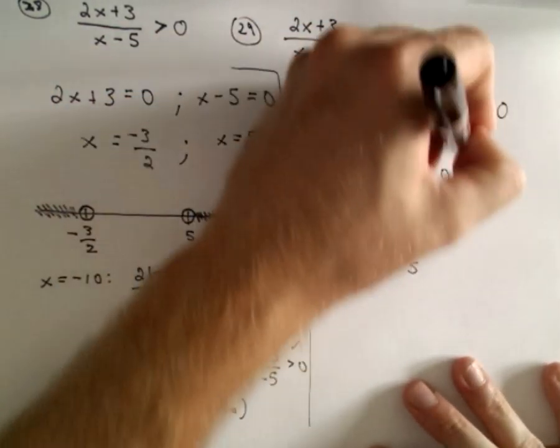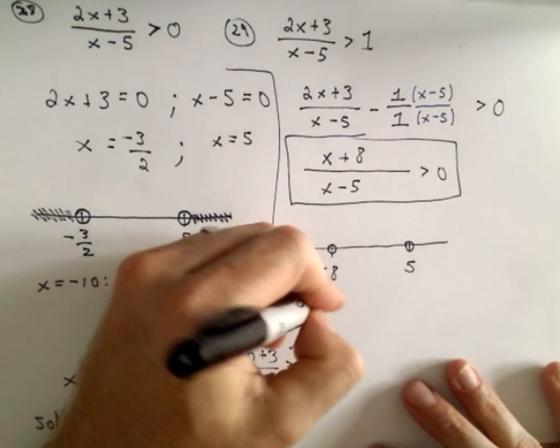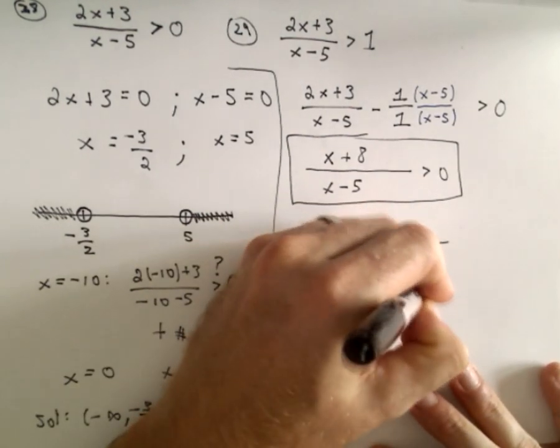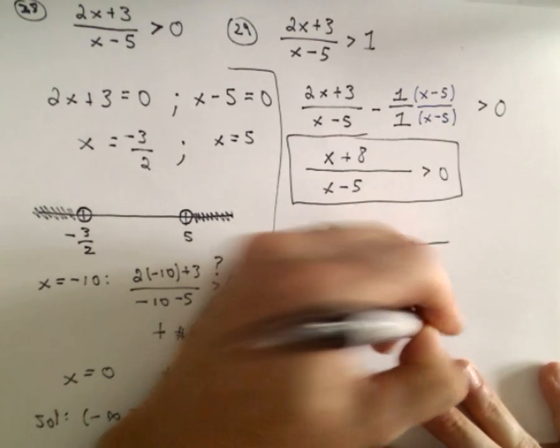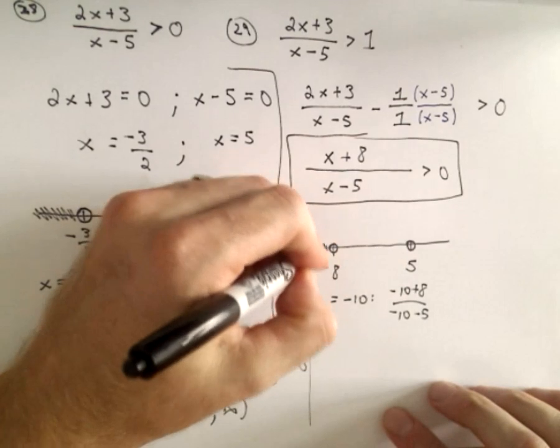So okay, I'm focusing in on this inequality because, to me, that's kind of the most simplified form. So if we use, say, x equals negative 10, we would have negative 10 plus 8, negative 10 minus 5. Again, that's going to give us a negative over a negative, which is going to be a positive, which is going to work.